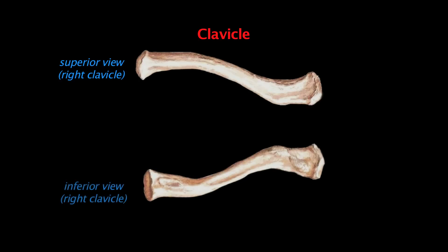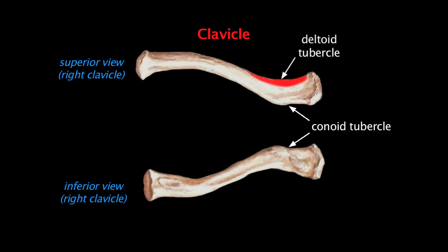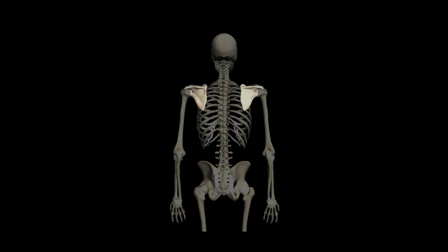A more detailed view of the clavicle shows some important features, including the conoid tubercle, which is located near the acromial end and comes off the posterior edge of the clavicle. Knowing this, you can determine if you're dealing with the left or right clavicle. Just opposite from the conoid tubercle, along the anterior edge, is the deltoid tubercle. Running along the inferior surface is a prominent groove called the subclavian groove, which is the site of attachment for the small muscle called the subclavius.